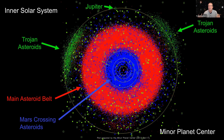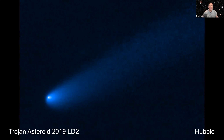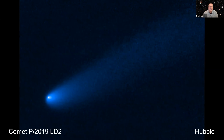What I really want to talk about are these green blobs in the upper left and upper right — these are the Trojan asteroids around Jupiter. There is a clump of asteroids about 60 degrees in front of Jupiter and 60 degrees behind Jupiter, because the gravity of the Sun and Jupiter balance out to create semi-stable points there. It was surprising when Hubble took a recent image of Trojan asteroid 2019 LD2 — it has a tail. It doesn't look like an asteroid. It is, in fact, Comet P2019 LD2.